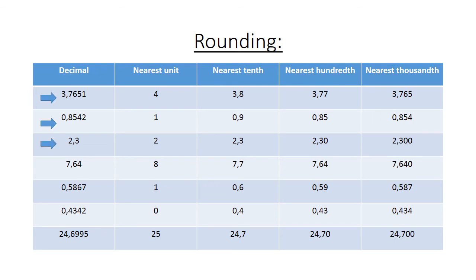Example 3: the nearest unit is 2, because 3 out of 10 is less than 5 out of 10, so we round down. The nearest 10 is 2,3. The nearest 100 is 2,3. The nearest 1000 is 3,3. For the next value: the nearest unit is 8, the nearest 10 is 7,7, the nearest 100 is 7,34, and the nearest 1000 is 7,640.